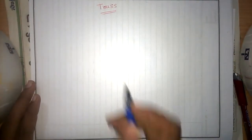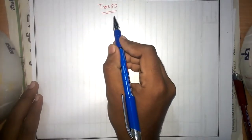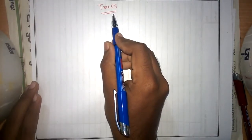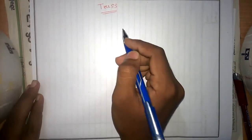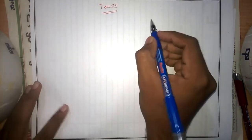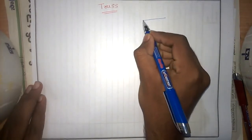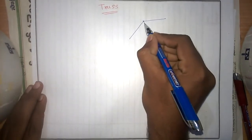The topic is called truss. A truss is a structure comprised of a combination of two or more members. Consider this as a truss.